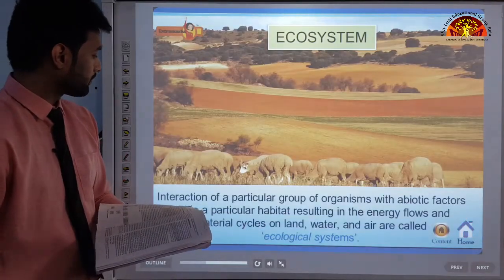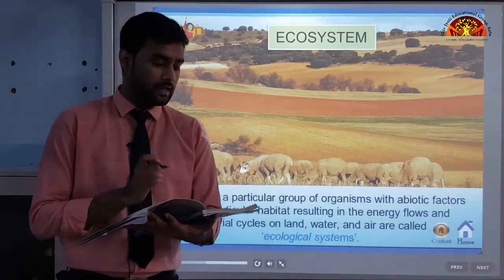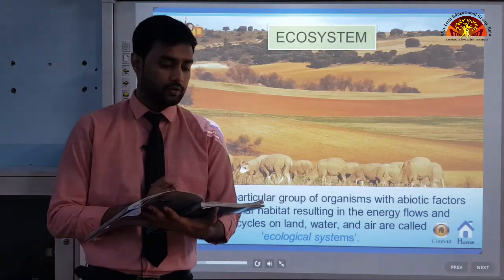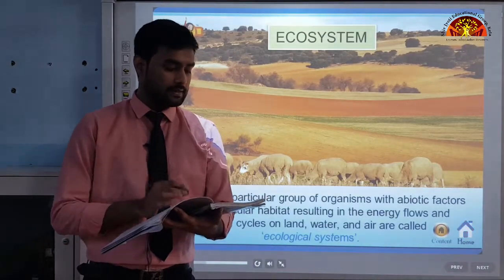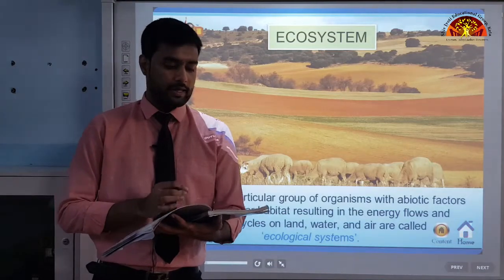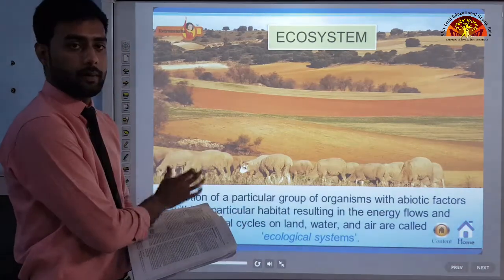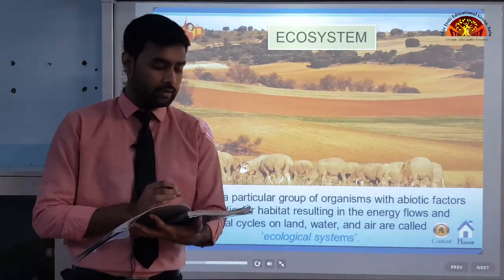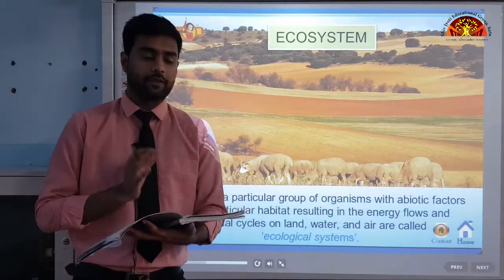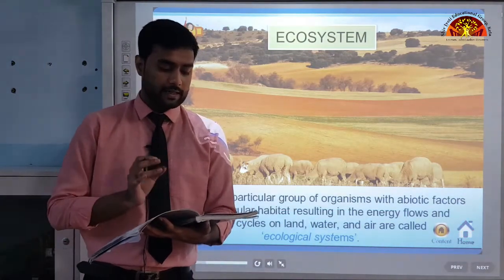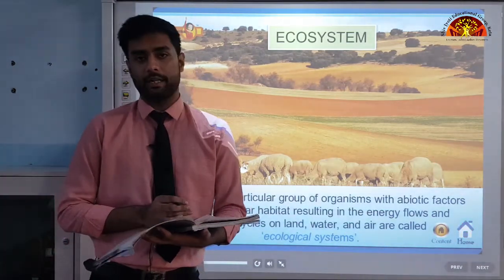Moving on to habitat. In the ecological sense, a habitat is the totality of the physical and chemical factors that constitute the general environment — in loose terms, a place where animals and plants live together. All components in an ecosystem are interrelated and interact with each other.